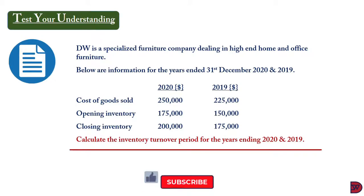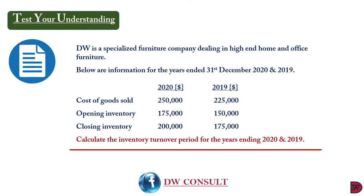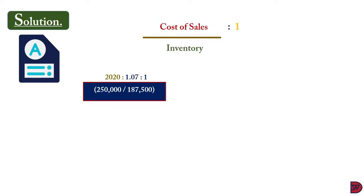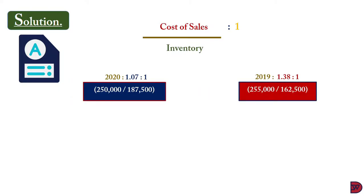DW is a specialized furniture company dealing in high-end home and office furniture. Below is information for the years ended 31 December 2020 and 2019, including cost of goods sold, opening inventory, and closing inventory. We calculate the inventory turnover ratio for both years. For 2020, the ratio is 1.07 to 1, achieved by dividing the cost of sales of $250,000 by inventory of $187,500. For 2019, the ratio is 1.38 to 1, achieved by dividing cost of sales of $255,000 by inventory of $162,500.